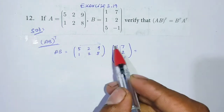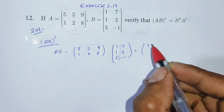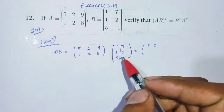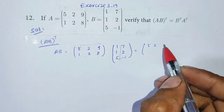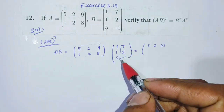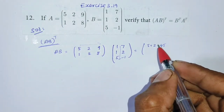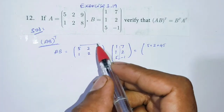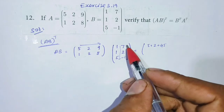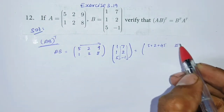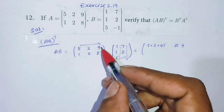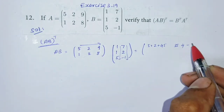First row, first column: 5×1=5, 2×1=2, 9×5=45. Multiply one row, one column to get one element, then plus. Next, first row, second column: 7×5=35, 2×2=4, 9×(-1)=-9. Okay, that gives one element: 35 plus 4, plus minus 9.